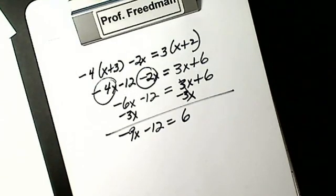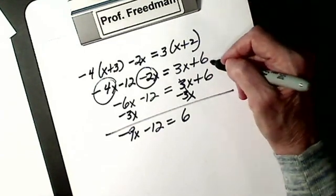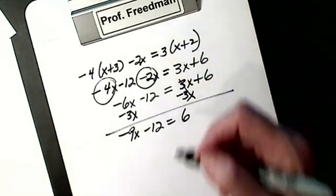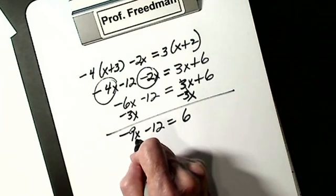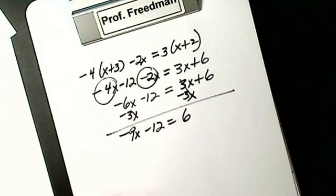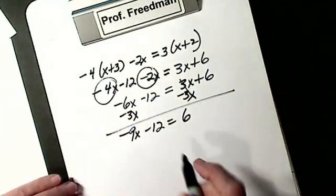Now I want X alone. I did distributive property, combined like terms on the same side of the equal sign, got all my X's on one side, now I have to get X alone. X is not alone. I work on the side of the X. I want to get rid of the negative 9 and negative 12. You don't touch the 6. Which one do I get rid of first? The 12. I'm not going to divide — it puts an algebraic fraction in, makes it worse.